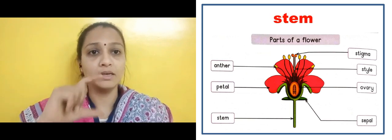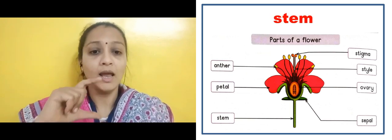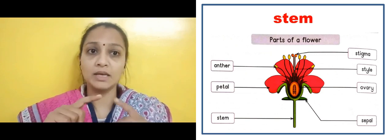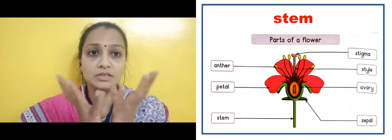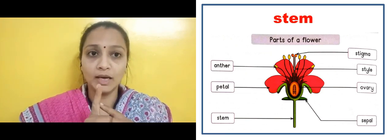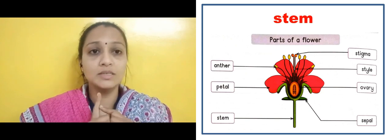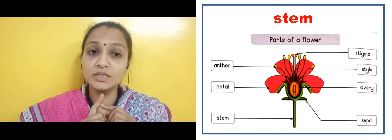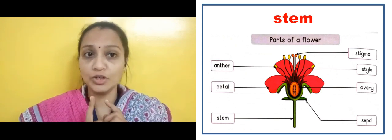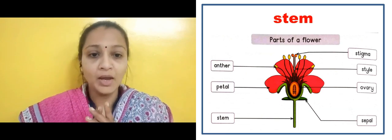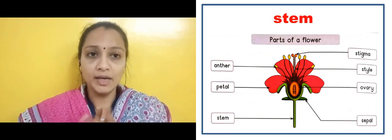The green colored part that is shown open at the bottom — that is known as Sepal. The green colored part below the flower that connects it downward — that is known as Stem. So these are the parts of a flower.